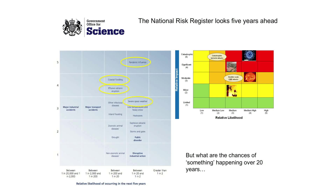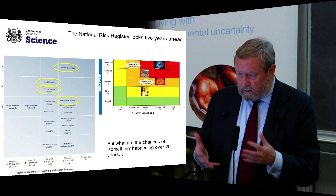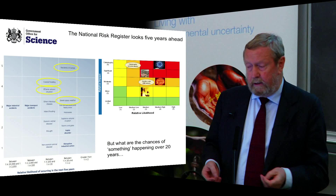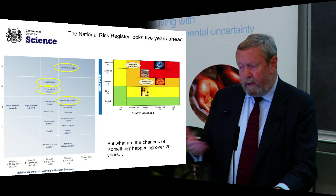To give you a clear idea, illustrated in red on the right-hand graph: pandemic influenza is seen as not only the highest likelihood risk, but also the one with the largest impact to affect society as we know it. Other risks here include severe space weather, volcanic eruptions, and coastal flooding. This is the way government plans five years ahead and thinks about how it can mitigate, prepare for, and have some degree of resilience to these events.